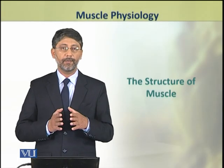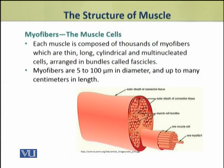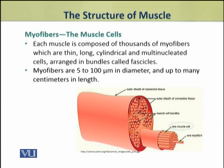Dear students, in this topic we shall discuss the structure of muscles. Each muscle is composed of thousands of muscle cells. These muscle cells are called myofibers. These myofibers are thin, long, cylindrical and multi-nucleated cells. These cells in a muscle are arranged in groups or bundles which are called fascicles. Each muscle cell or myofiber is about 5 to 100 micrometers in diameter and may be many centimeters long.